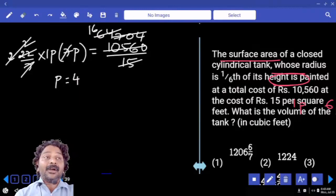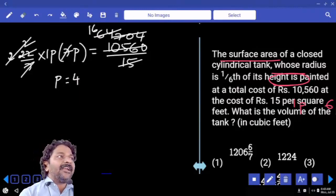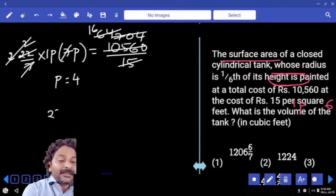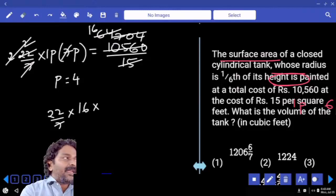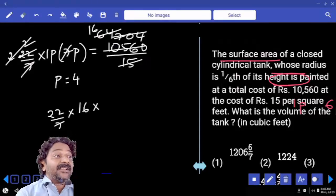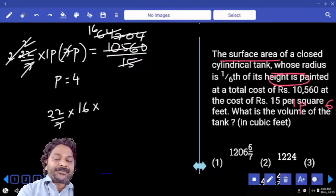Now what exactly is the question? Volume of the tank, cylindrical tank. Cylindrical tank volume πr² where radius is one part which is 4 only. 4 square is 16. πr² times height. What is height? 6 parts. 6 into 4, 24.